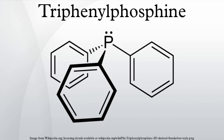Triphenylphosphine is a relatively inexpensive substance. It can be prepared in the laboratory by treatment of phosphorus trichloride with phenylmagnesium bromide or phenyllithium. The industrial synthesis involves the reaction between phosphorus trichloride, chlorobenzene, and sodium: PCl3 + 3PhCl + 6Na → PPh3 + 6NaCl.